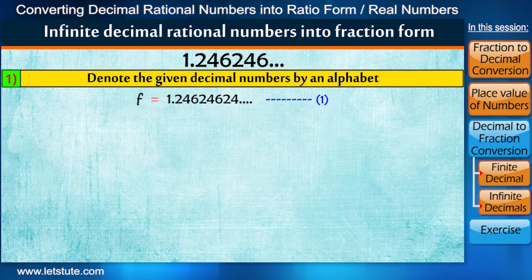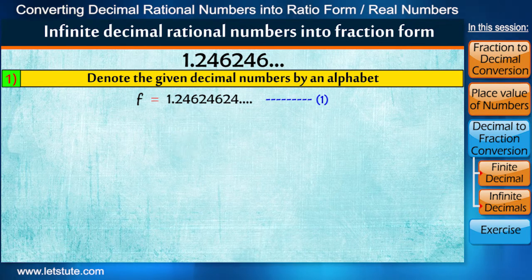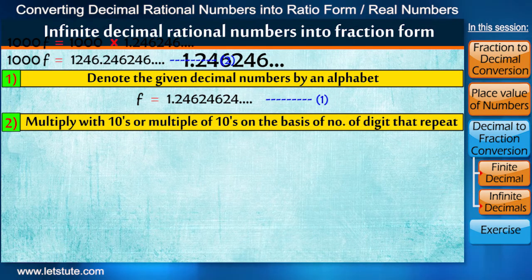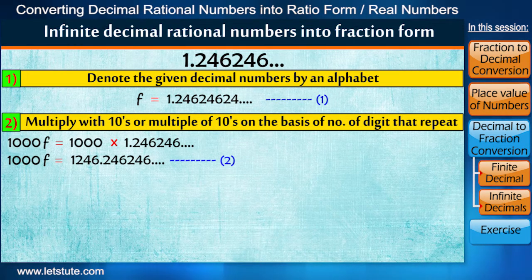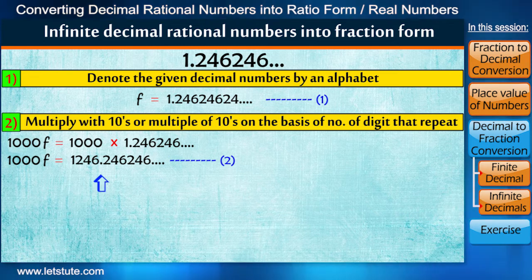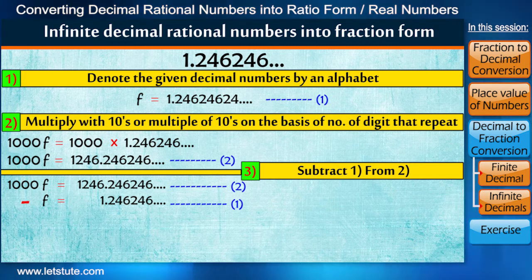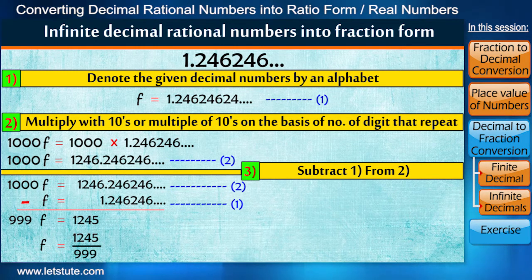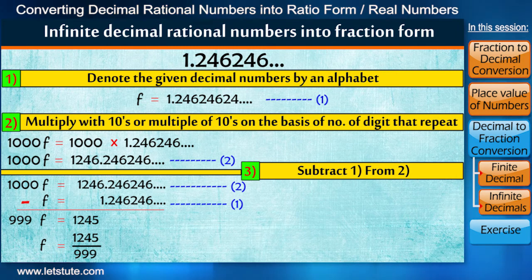Next, we check that after decimal, 3 digits are repeating. So we multiply by 3 tens, that is by 1000, on both the sides. Now third step is to remove this decimal point. So we subtract 1 from 2.